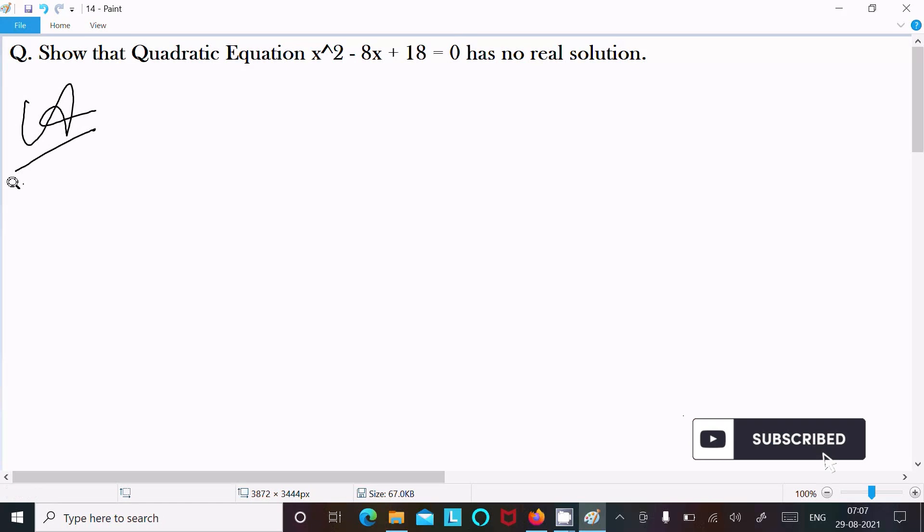So let's see the answer. Here writing the given equation x square minus 8x plus 18 equal to 0. I am going to break this into whole square form.